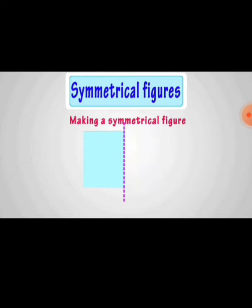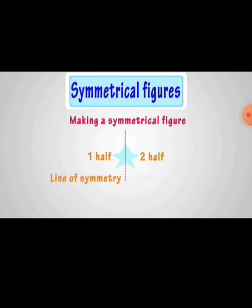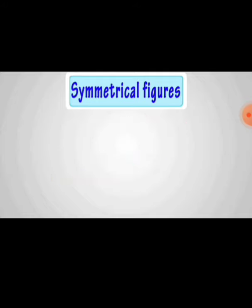Making symmetrical figures. Observe the figure. Here this figure is divided into two halves that are exactly similar. The dotted line is called line of symmetry. One half is completely covered when the other half is closed, so this shape is a symmetrical shape.